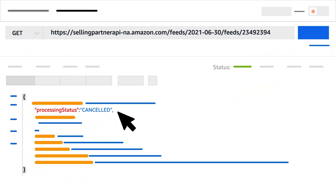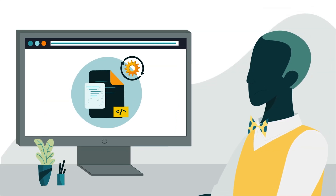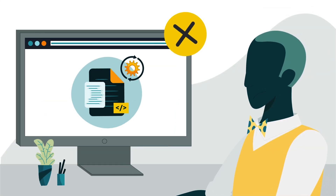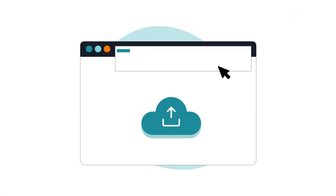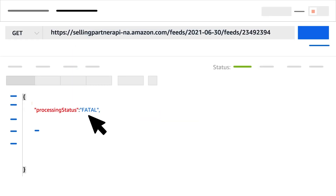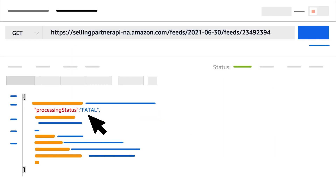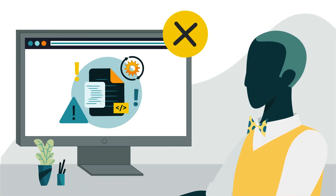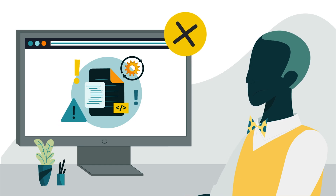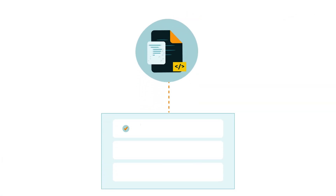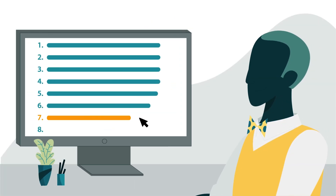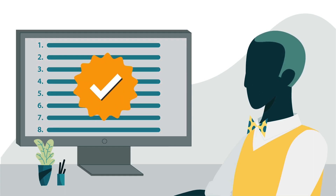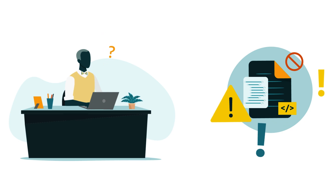If Processing Status returns as Cancelled, your feed was terminated before processing began — start again with Step 1 of the feed submission process and obtain a destination URL. If Processing Status returns as Fatal, your feed encountered an error while processing and was terminated. Some or all of the operations within the feed might have been completed successfully — move to the next step in the submission process. You'll need to complete the process in full to determine how the error has impacted your feed.